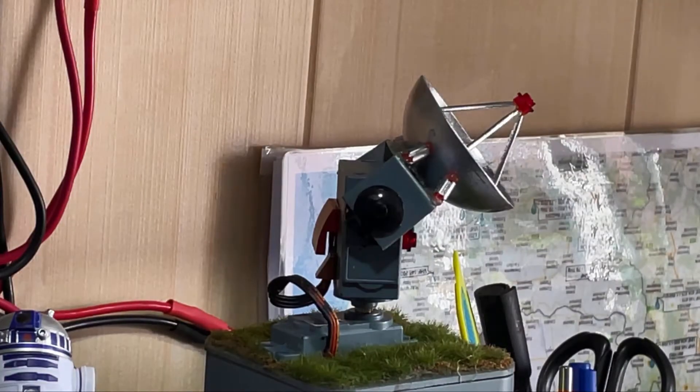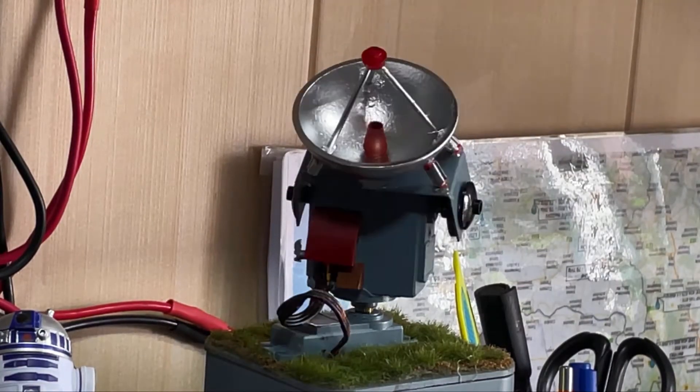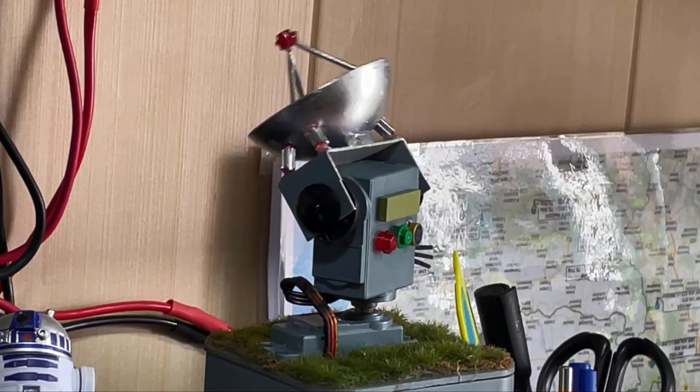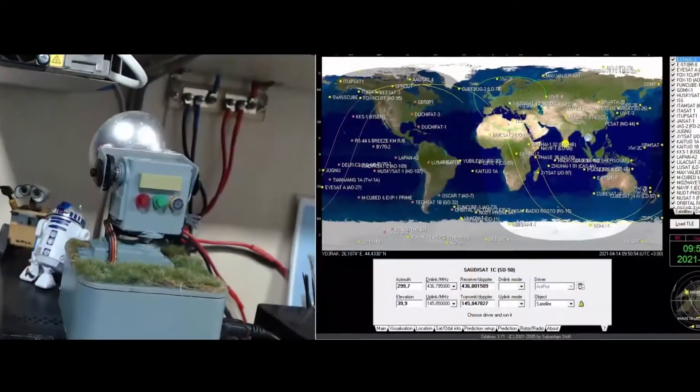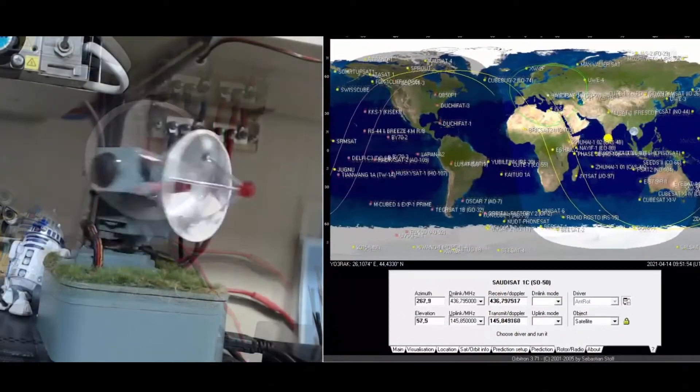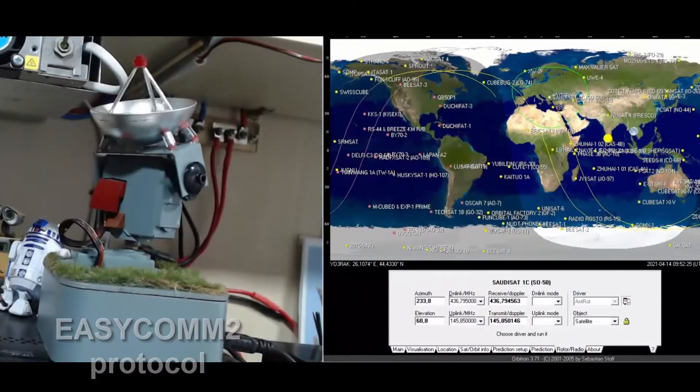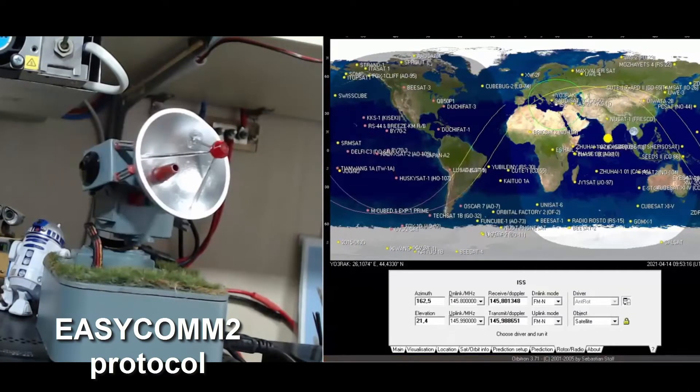This is the finished product. There are a lot of these pan-tilt device tutorials, but mine is different because it can be controlled by the computer. You can use Orbitron or other satellite tracking software compatible with EZCOM 2 protocol. Most of them are free.